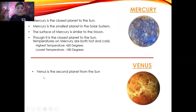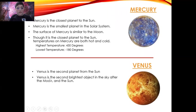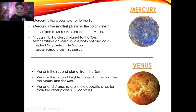Venus. Venus is the second planet from the sun. Venus is the second brightest object in the sky after the moon and the sun. Venus and Uranus rotate in the opposite direction than the other planets.